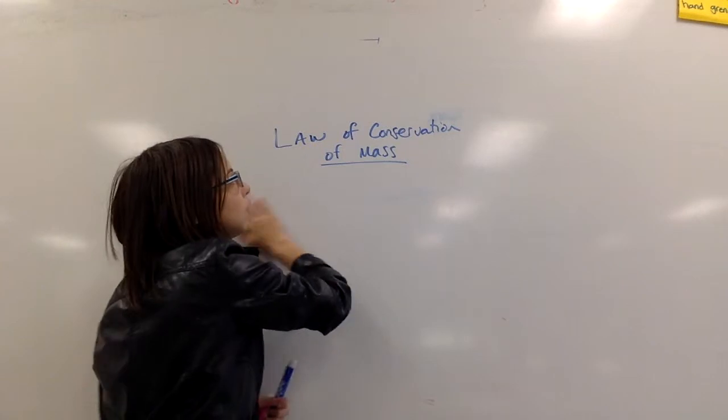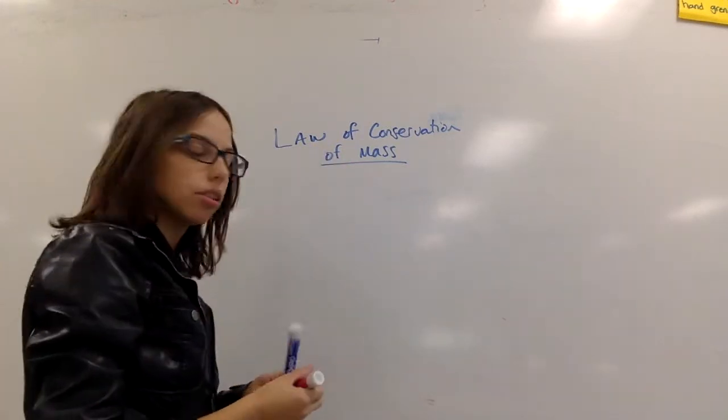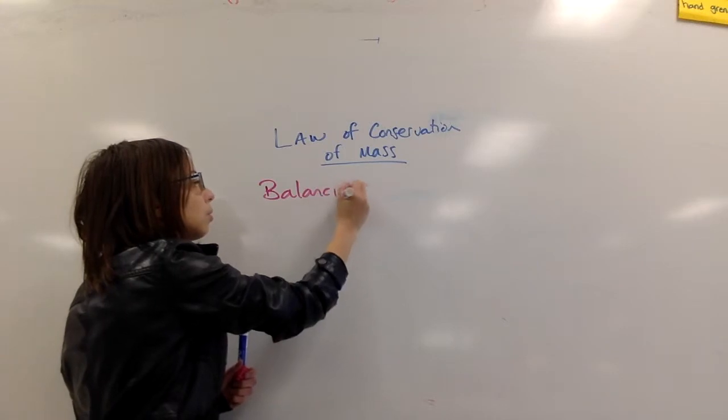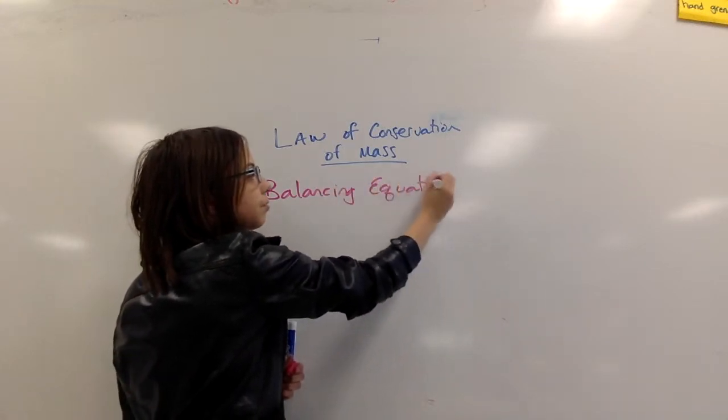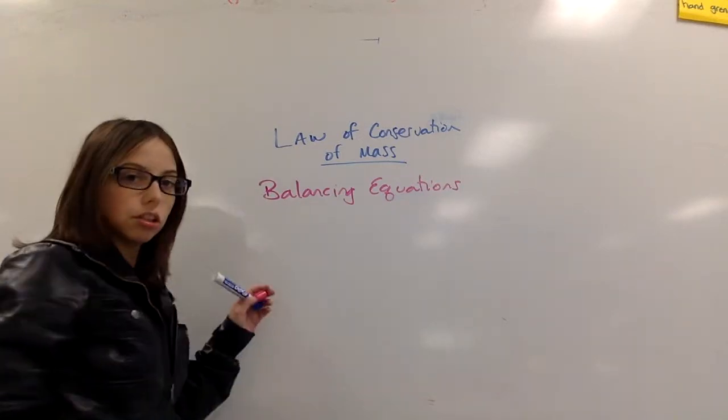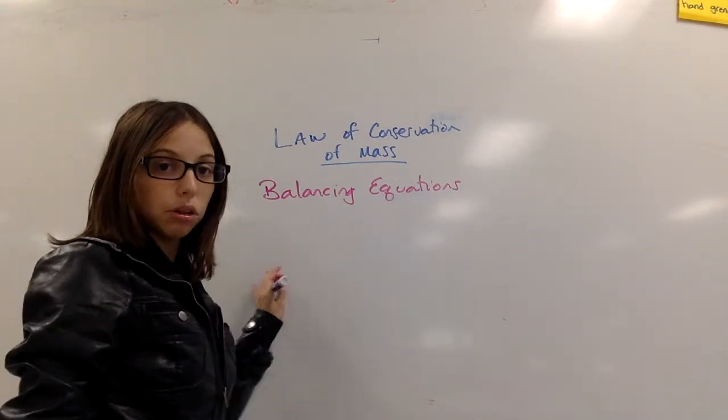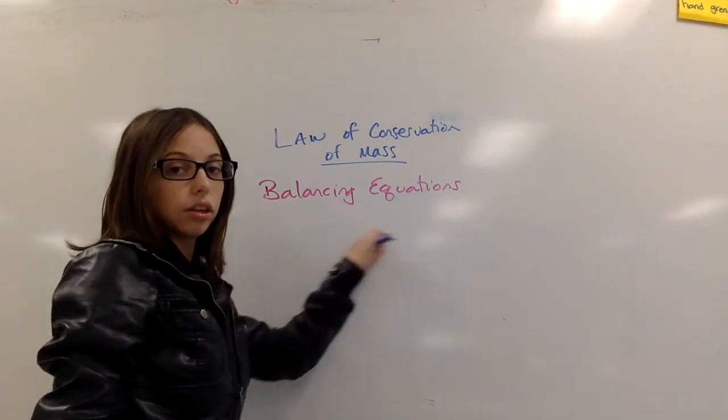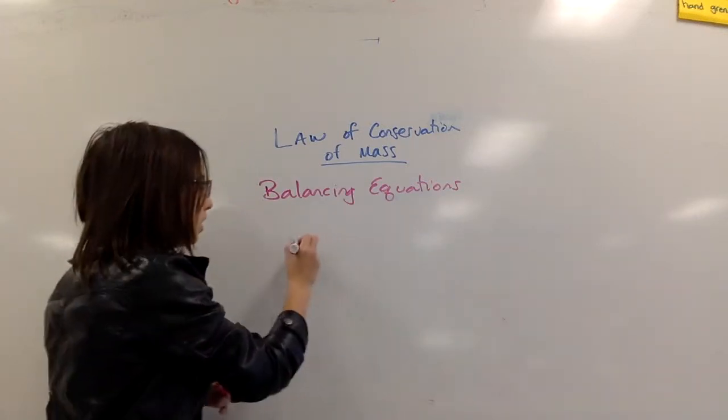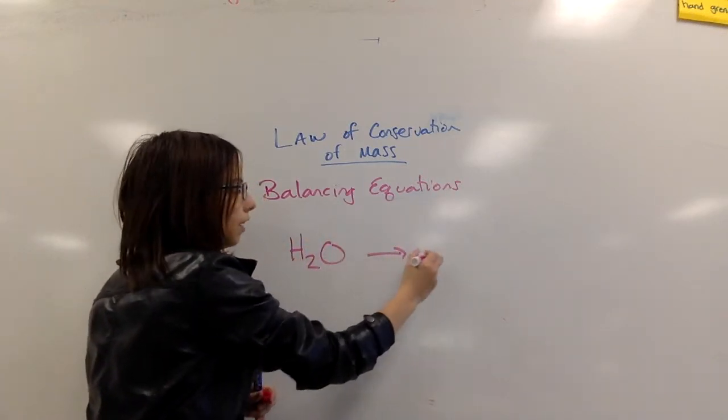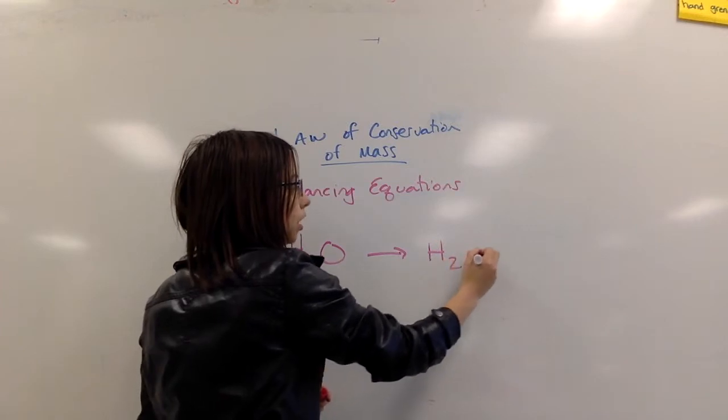So how we do that, how we show this law of conservation of mass is through balancing equations. Some equations, when you write them, when you write out the formulas, when you say I have this ingredient turns into these products, it doesn't always account for every atom that's there. I'll give you an example.